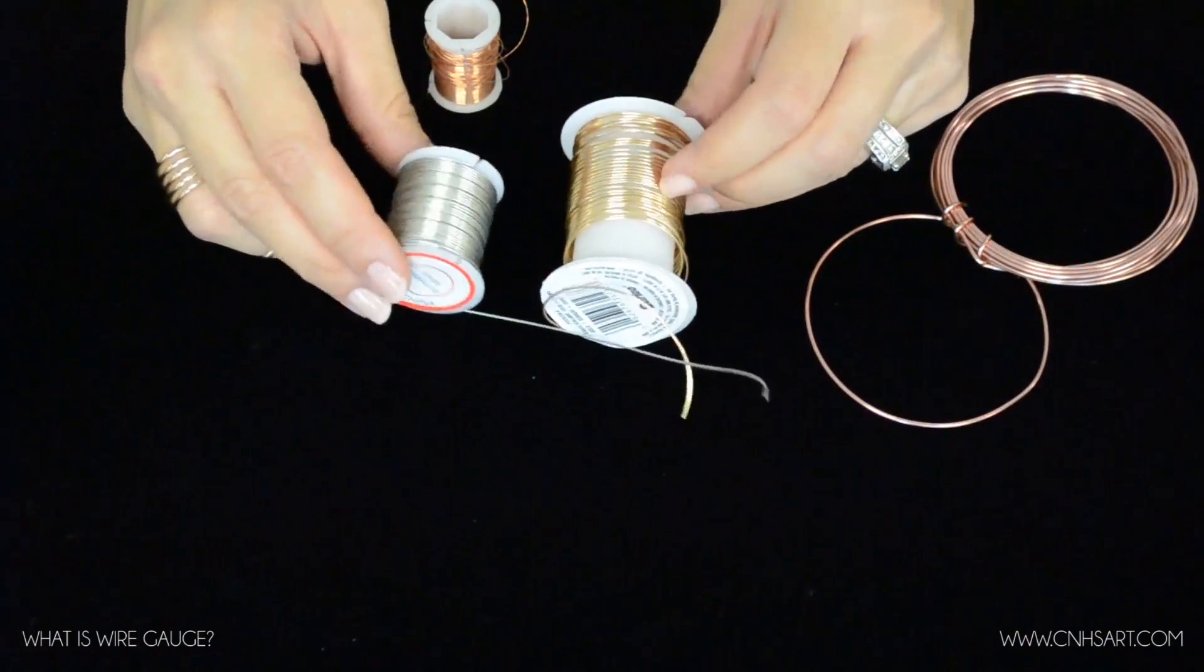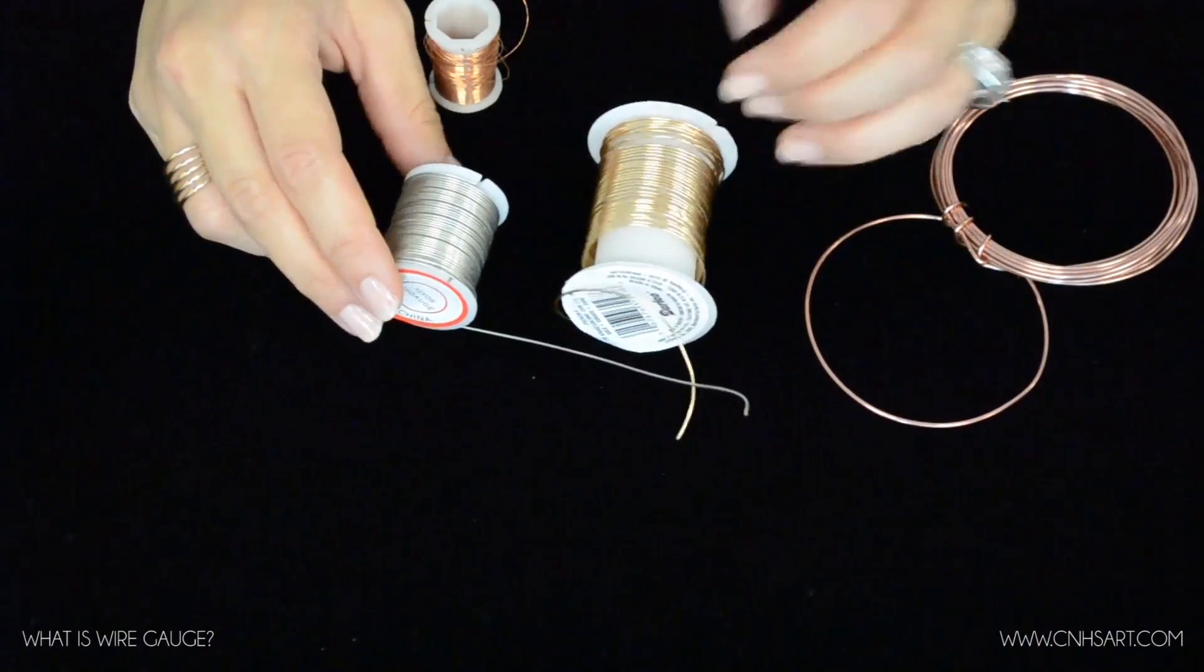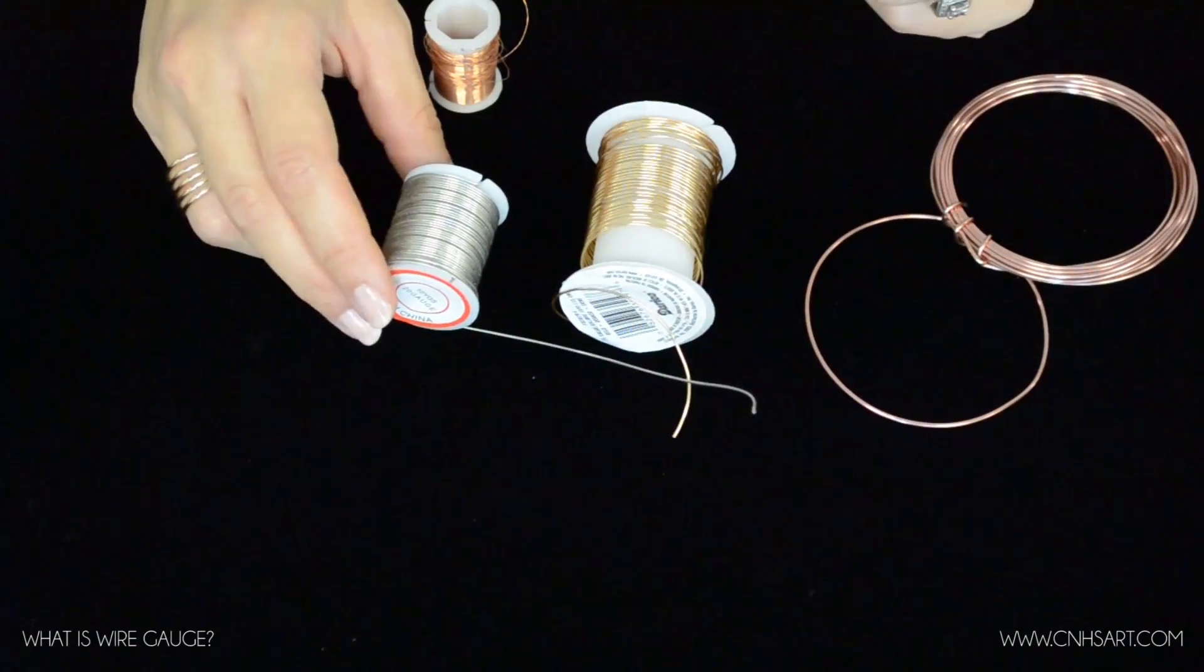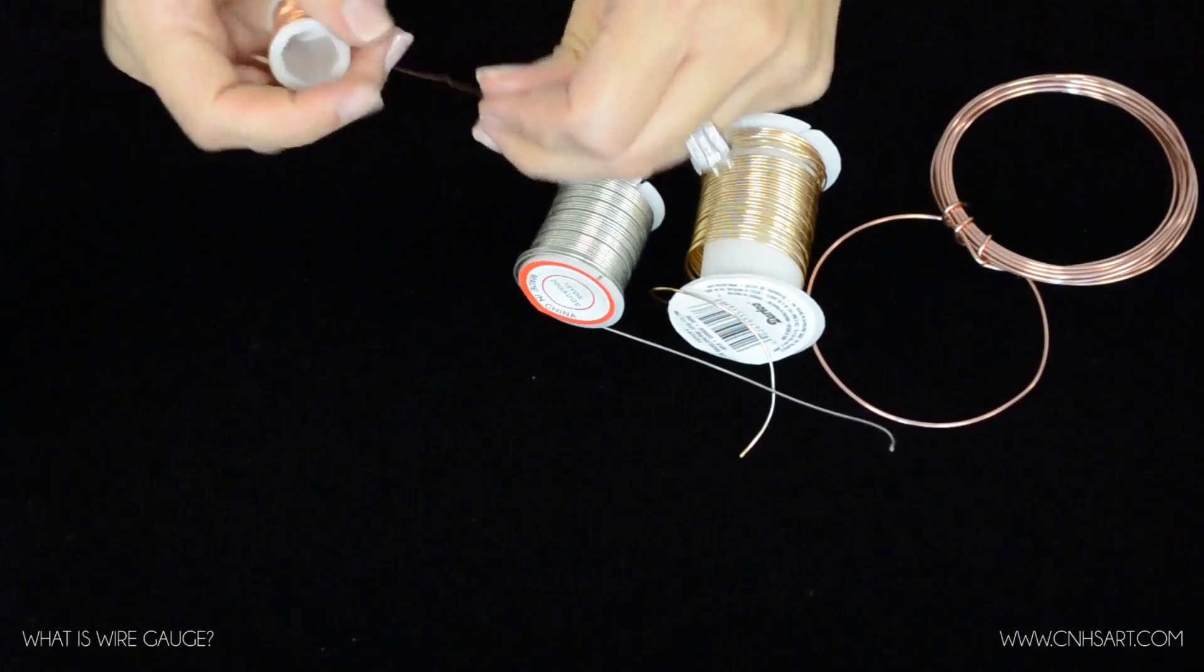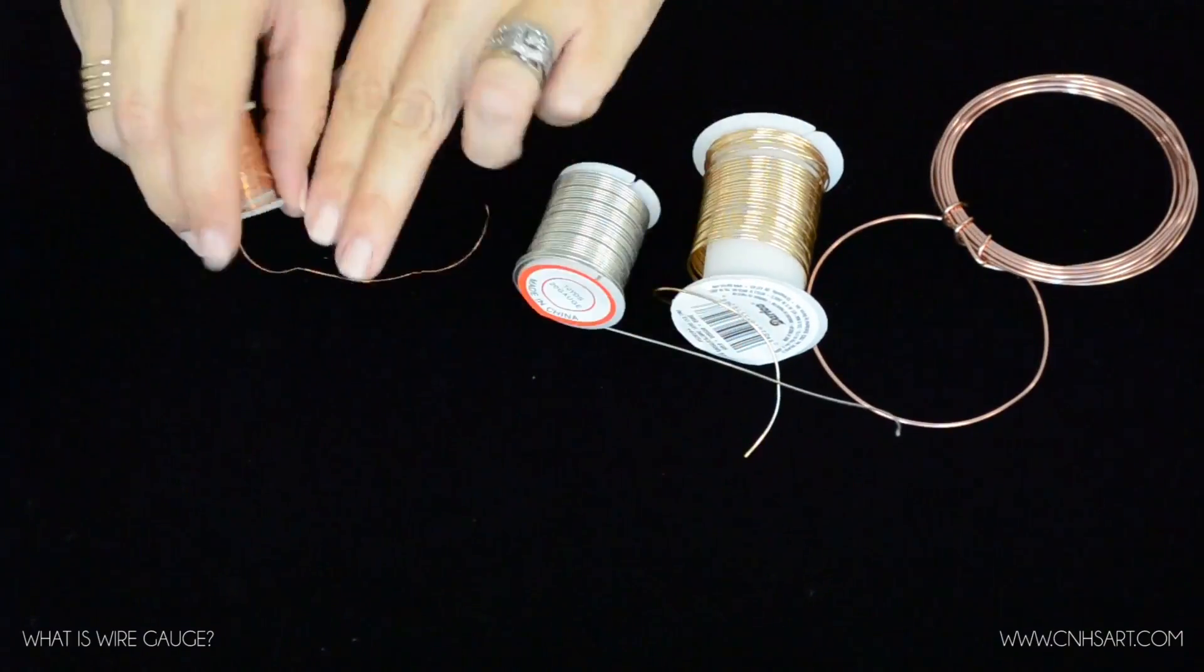So even though the number is getting larger, the wire is smaller. And then this last one I want to show you, which is really thin and kind of flimsy, it gets kinks in it a lot. This is 30 gauge wire.